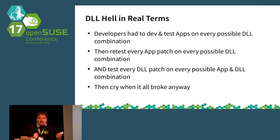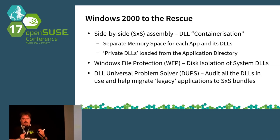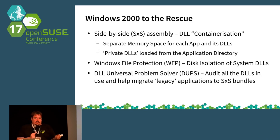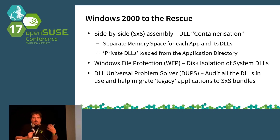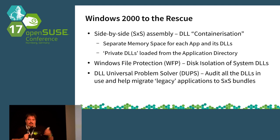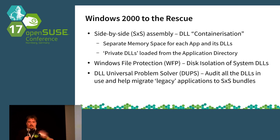Microsoft thought they could fix this, and they tried very hard to do that, and they were somewhat successful. Windows 2000 introduced this concept of side-by-side assembly, which is basically containerization or application isolation for the Windows world: having a separate memory space for every single application and all of its DLLs, loading up those DLLs privately from a folder in the file system, having Windows file protection, doing disk isolation of system DLLs, and having fancy tools to audit all of that and migrate legacy applications.